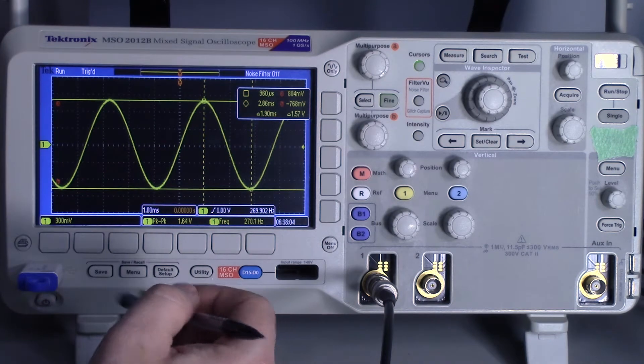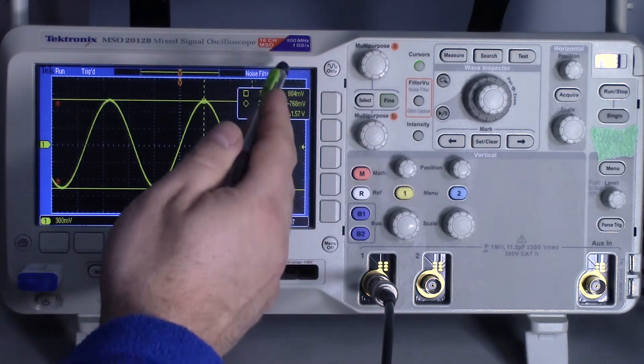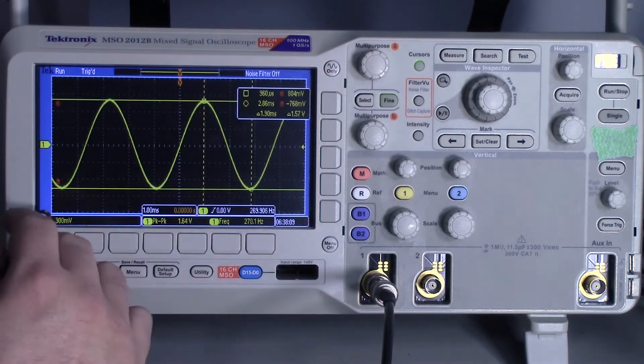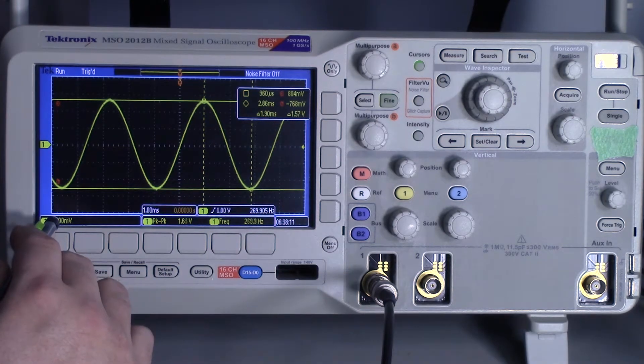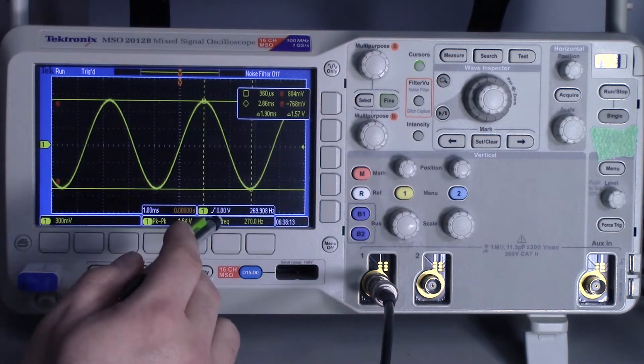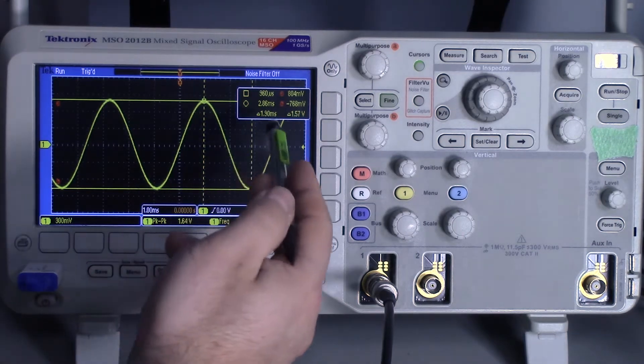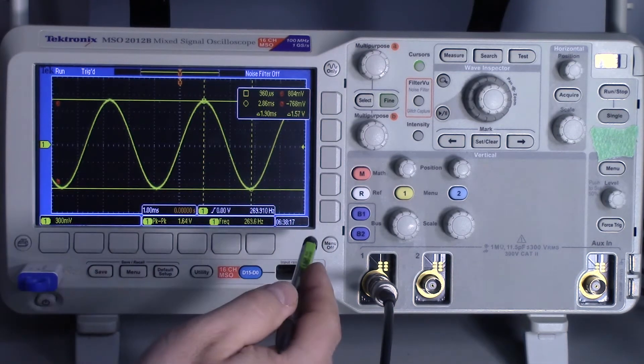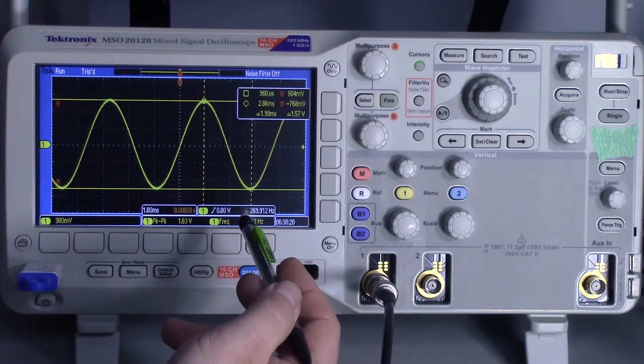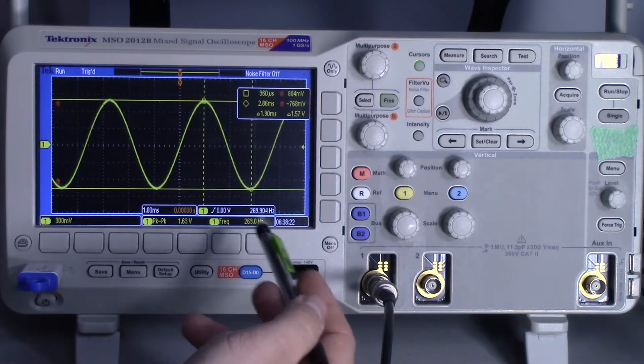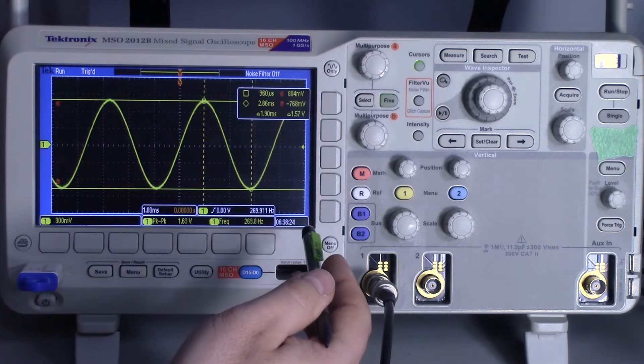One of the things that we can do is save the screen as an image, save the waveform, and also save our setup. If we want to maintain our particular vertical scale and horizontal scale, maybe we have the cursor set up in a certain way, we can save that as well. Later on, if we're doing something like a repetitive measurement, we can just select various setups.